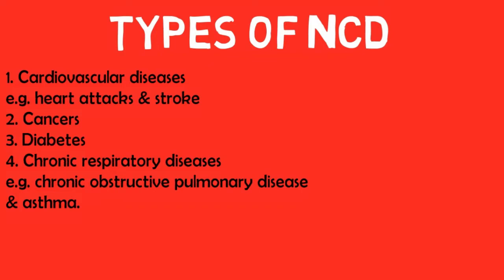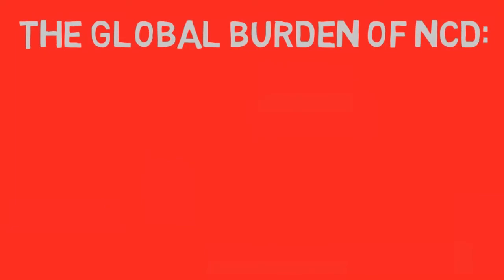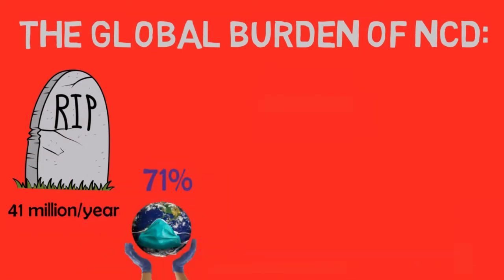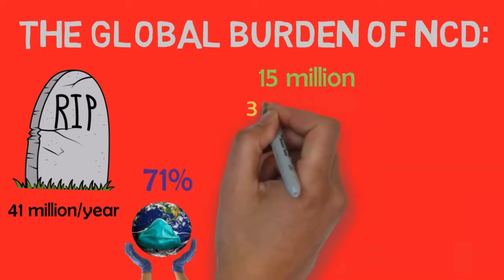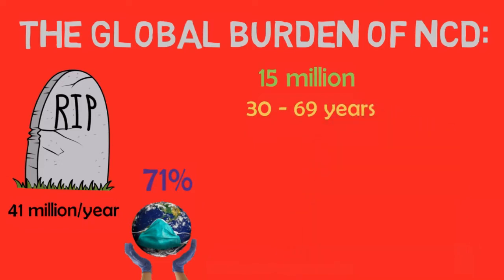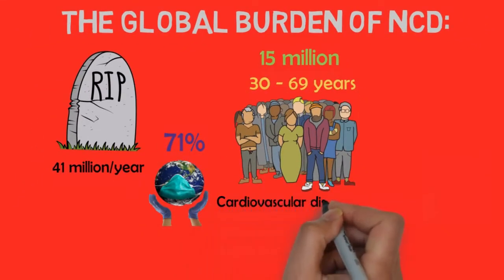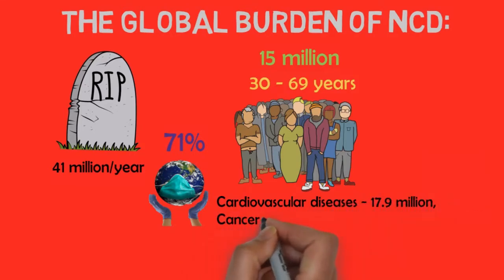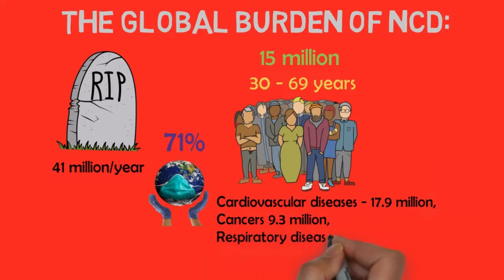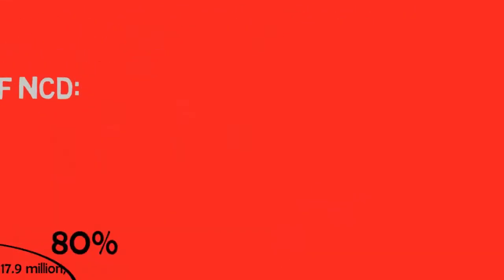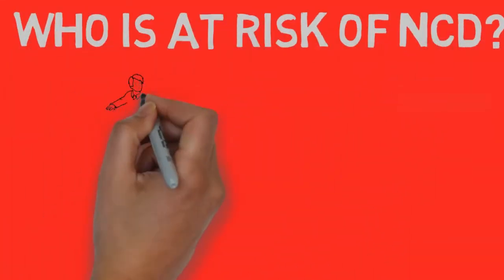Many other important conditions are also considered non-communicable diseases, including injuries and mental health disorders. Non-communicable diseases kill 41 million people each year, equivalent to 71 percent of all deaths globally. Each year, more than 15 million people die from non-communicable disease between the ages of 30 and 69 years, and 85 percent of these premature deaths occur in low and middle-income countries. Cardiovascular diseases account for most NCD deaths — 17.9 million people annually — followed by cancers at 9.3 million, respiratory diseases at 4.1 million, and diabetes at 1.5 million. These four groups account for over 80 percent of all premature NCD deaths.